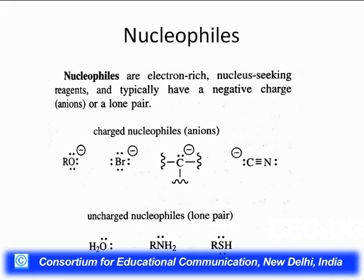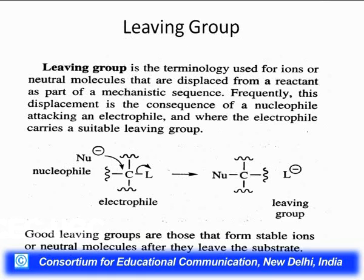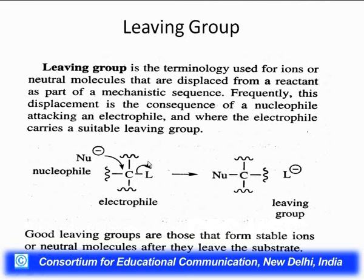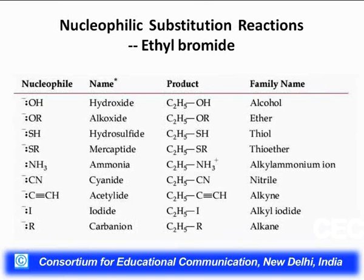How do these nucleophiles affect the rate of reaction? This will be discussed later. A leaving group is the species that departs from the molecule with the bonding pair of electrons. A good leaving group should be a weak base after it departs — it should be stabilized if it is an anion, or it should be a stable molecule. When the nucleophile displaces the leaving group, we get a substituted product.